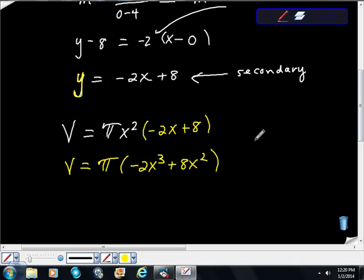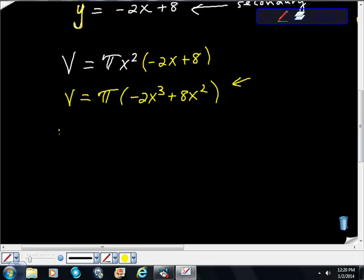So remember, we're supposed to optimize this. So to optimize this, I'm going to take its derivative, and we're going to take the derivative of volume with regard to the change in x. And this is just a constant multiple here, right? So take the derivative of the inside, which is negative 6x squared plus 16x.